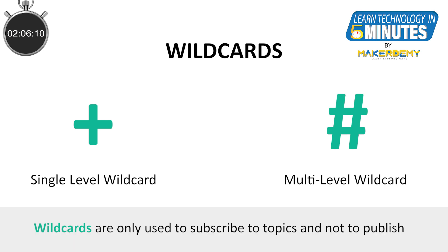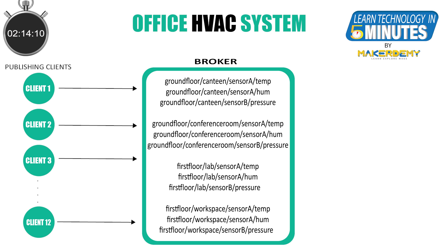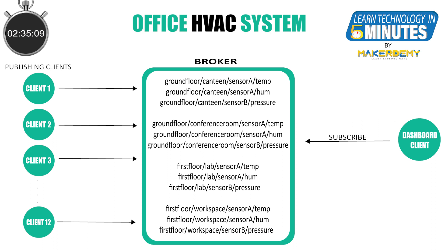It is also to be noted that wildcards are only used to subscribe to topics and not to publish. Before we look at the working of the two wildcards, let's assume the following topics are created in the broker by the publisher clients. As the name suggests, a single-level wildcard replaces one topic level. For example, if you want to know all the temperature and humidity readings of the whole ground floor, the dashboard client will send a subscribe packet with the topic: ground floor / + / sensor A / +.